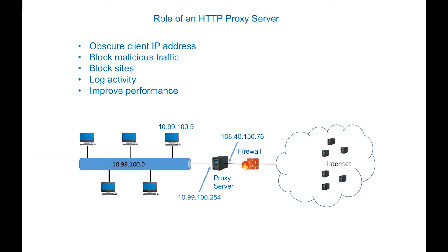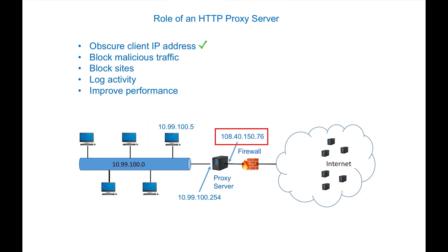The diagram shows the principal uses of an HTTP forward proxy server. The proxy server can obscure a client's IP address when routing requests from a private network to the Internet. When a client's machine sends a request to a web server, the proxy server converts the private IP address to a public IP address before routing the request to the web server. The proxy server sends the response back to the client who initiated the request.